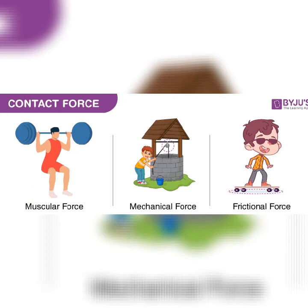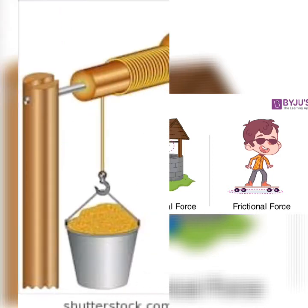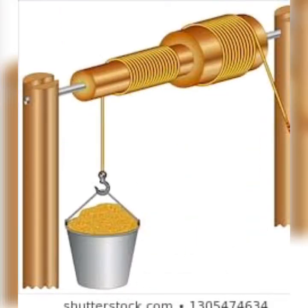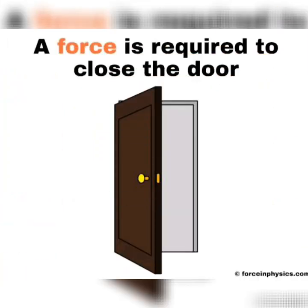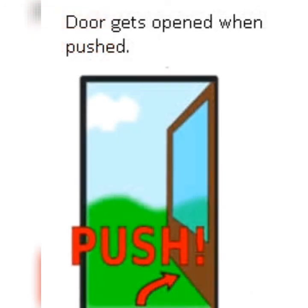Mechanical force includes bending or breaking of things. Basically, a force that involves contact with another object and which produces a change in state of rest or motion is called mechanical force. For example, closing the door of a house — when we want to close the door, we first make contact with the door that is in a state of rest, and then it moves so that it can close. This is a simple example of mechanical force.